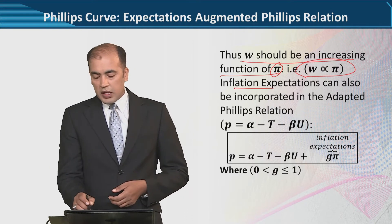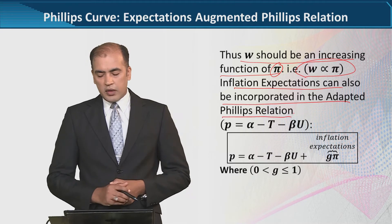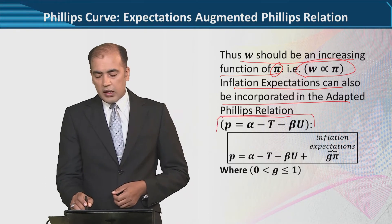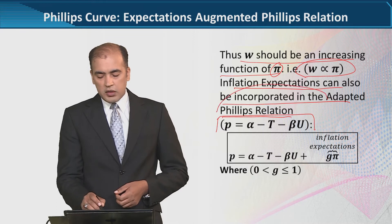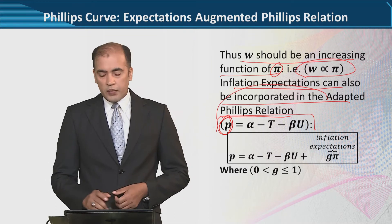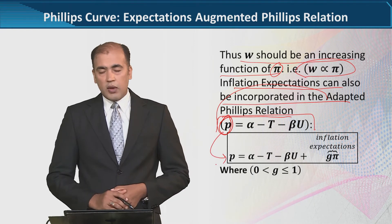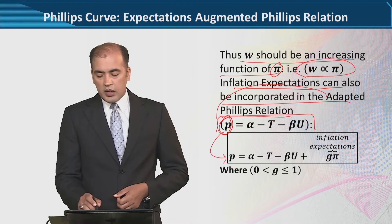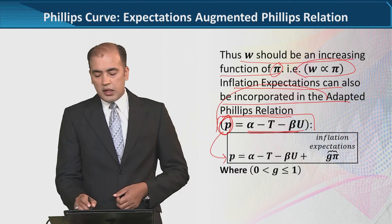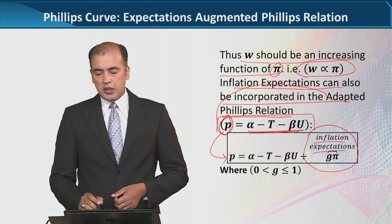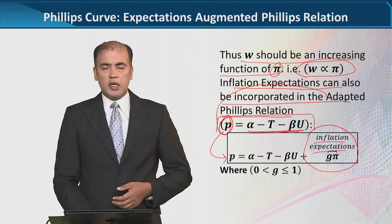Inflation expectations also incorporate the adaptive version of the Phillips curve. We now bring in the adaptive version, in which instead of wages we have the inflation rate. This is what we developed in the last lecture. The new thing added here is inflation expectations, as you can see. The parametric restrictions for g are also stated.